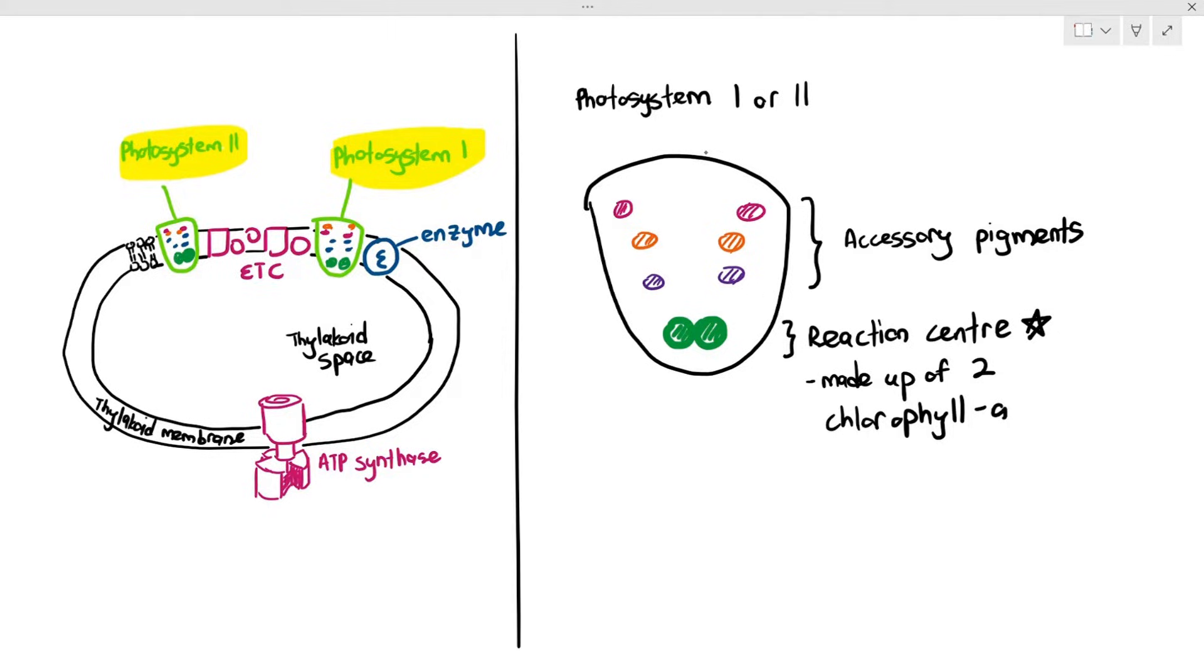You need to know that each photosystem, whether it's photosystem 1 or photosystem 2, it doesn't matter. The photosystems are made out of many accessory pigments, and it also has two chlorophyll A molecules joined together to form the reaction center.